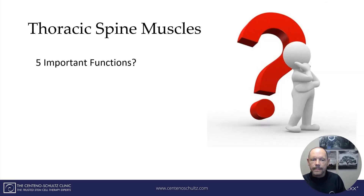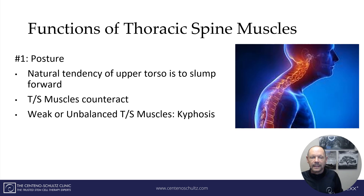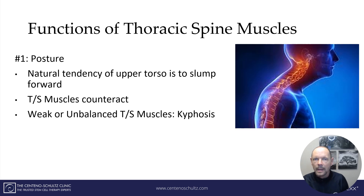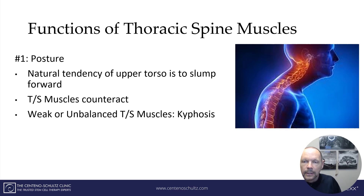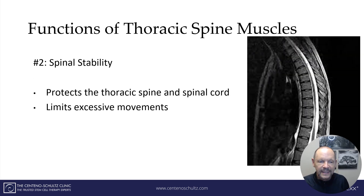So what are the five most important functions of the thoracic spine muscles? Number one is posture. Our normal tendency of the upper torso is to fall forward, and that's only exacerbated by excessive screen time and time on the phone. What can counteract that are all those thoracic spine muscles — the deep, intermediate, and superficial — which help us stand tall and prevent us from becoming kyphotic. You know that person in the grocery store that bends over and can't stand up? That's kyphosis.